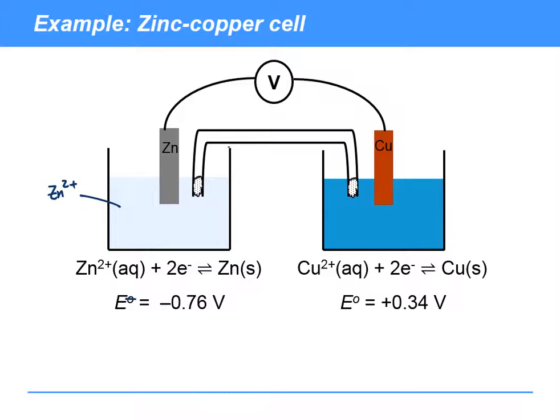We also have connected to that a copper 2+ copper half cell. So this would be copper 2+, and in that case, the standard electrode potential was plus 0.34 volts.